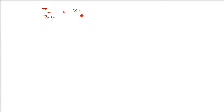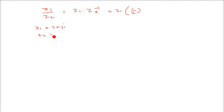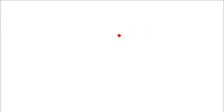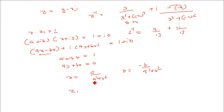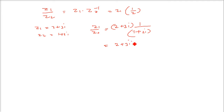For division of complex numbers, Z1/Z2 can be written as Z1 · Z2⁻¹. For example, if Z1 = 2 + 3i and Z2 = 1 + 2i, then Z1/Z2 = (2 + 3i) · (1/(1 + 2i)). Using the inverse formula for 1 + 2i, we get Z2⁻¹ = 1/5 − 2i/5. Multiplying (2 + 3i)(1/5 − 2i/5) gives 8/5 − i/5.